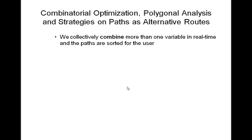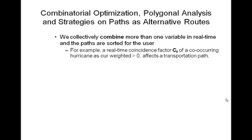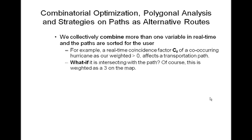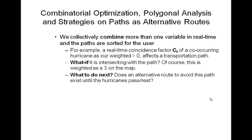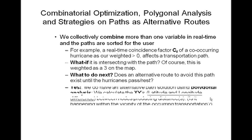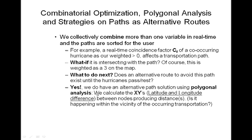We collectively combine more than one variable in real time and the paths are sorted for the user. For example, a real-time coincidence factor of a co-occurring hurricane — weighted greater than zero — affects a transportation path. If it is intersecting with the path, this is weighted as a 3 on the map. We do offer an alternative path solution using polygonal analysis to avoid this path until the hurricane passes.